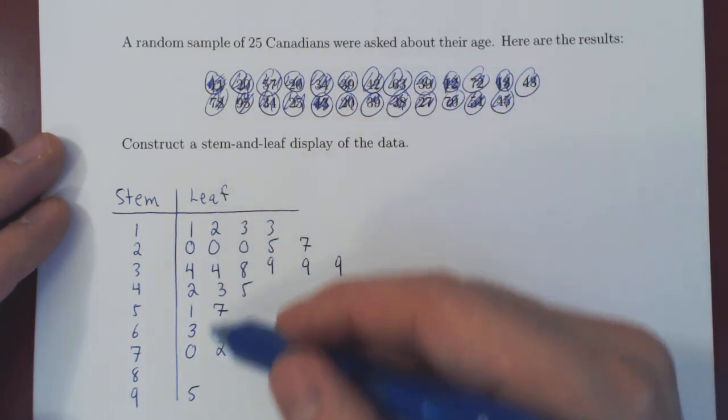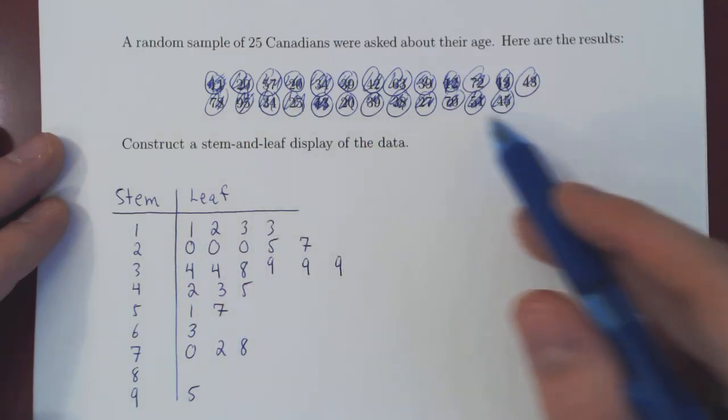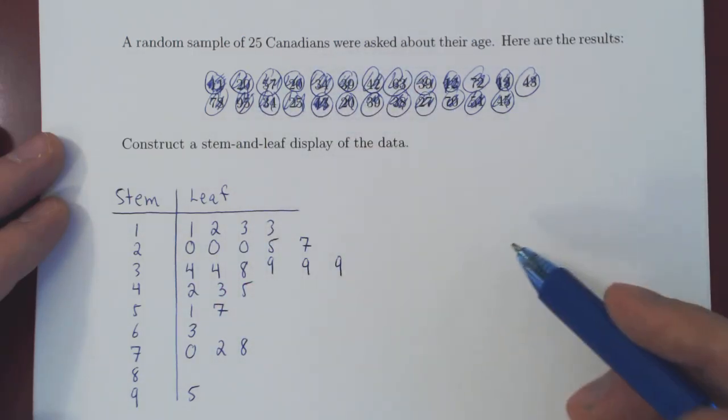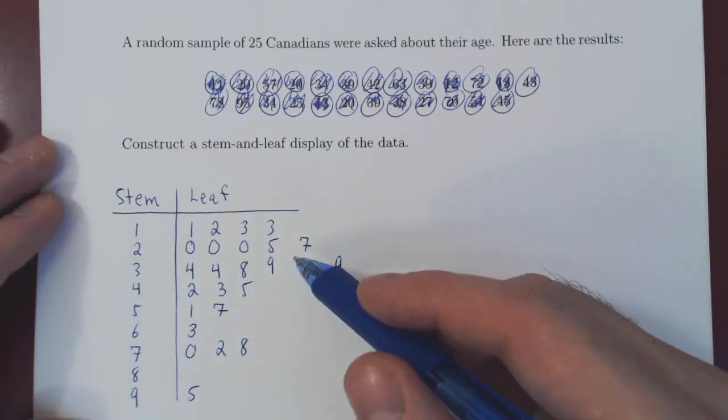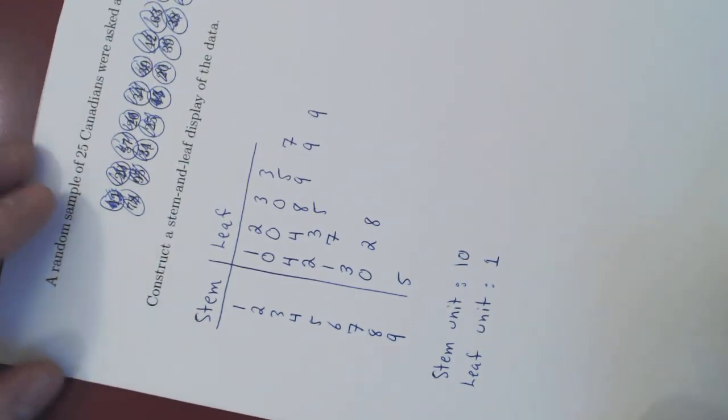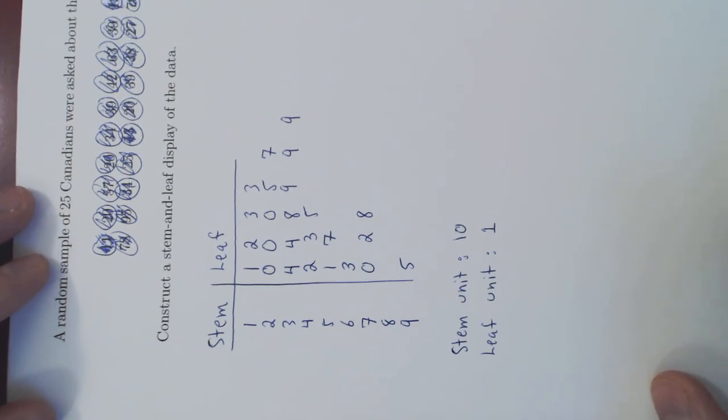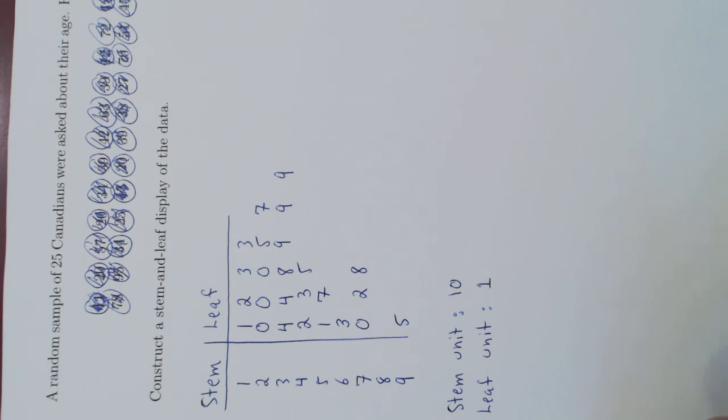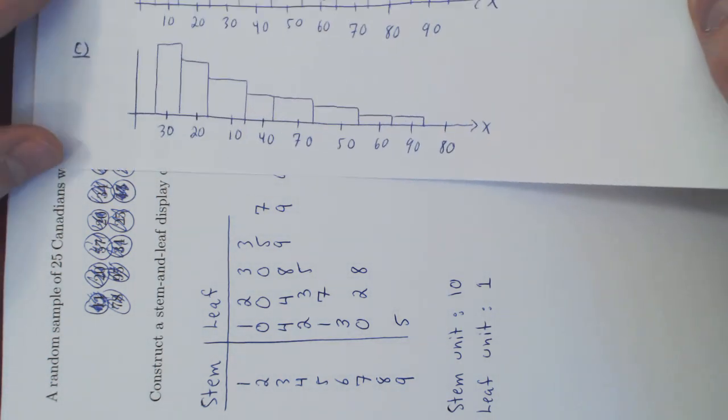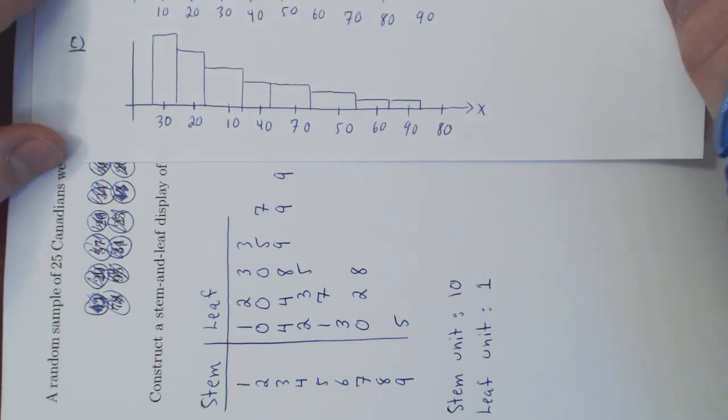And that is the complete stem and leaf display for the raw data of 25 values. And if you now think of this, if you turn this on its side, what you have is essentially the bar graph, except none of the raw data is lost, right? Add to this our bar graph groups.